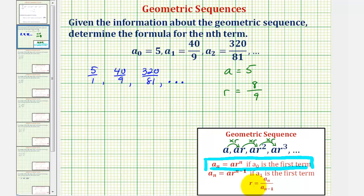Now if we want to use the formula, we would have r equals, we can select any term except the first term. Let's select the second term. So we'd have 40 ninths.